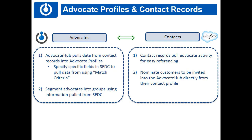First we're going to talk about advocate profiles and contact records. The Advocate Hub pulls data from the contact record in Salesforce and puts that information on the advocate's profile in the Advocate Hub. You can specify which fields — there are basic fields it always updates: title, your advocate's name, and a field called Salesforce ID. If an advocate exists in Salesforce, our integration will do a nightly sync.